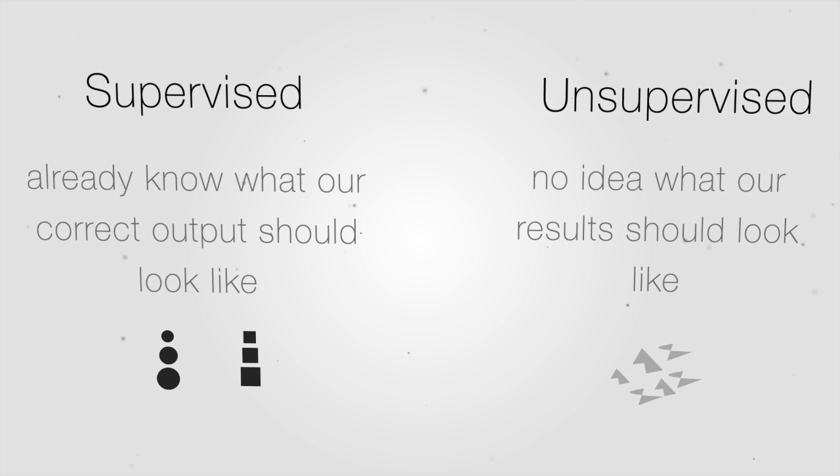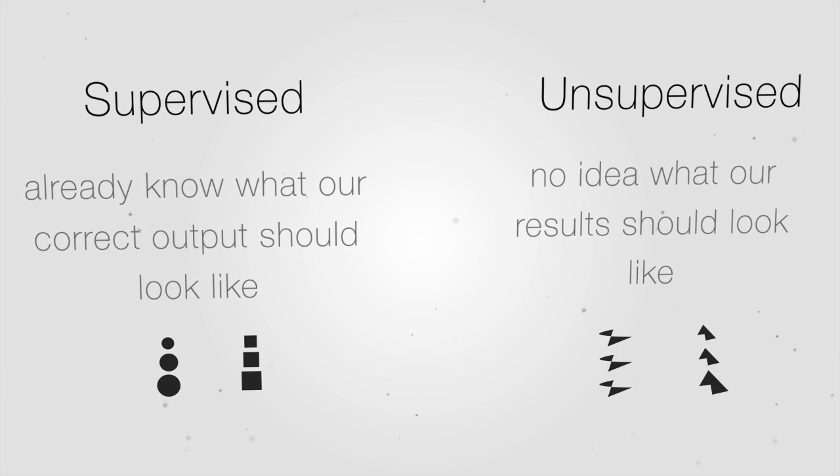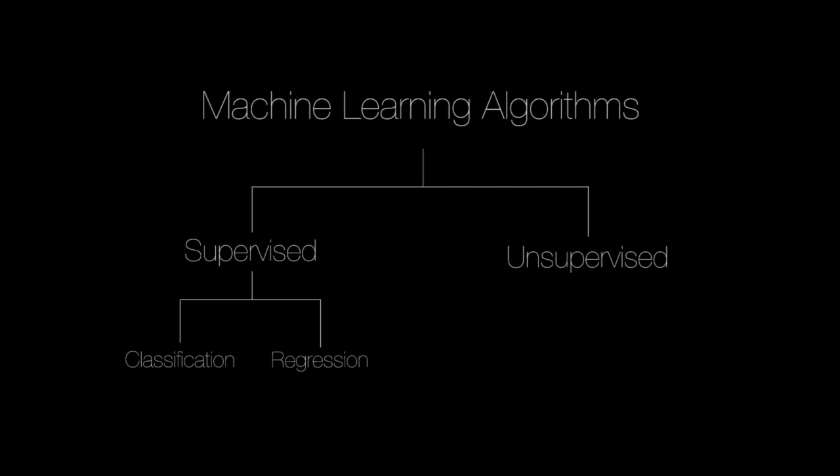Whereas in unsupervised learning, we do not have a desired output, but we can differentiate by clustering of data. There are other types as well such as reinforcement learning and semi-supervised learning, but we will not concern ourselves with them for now.